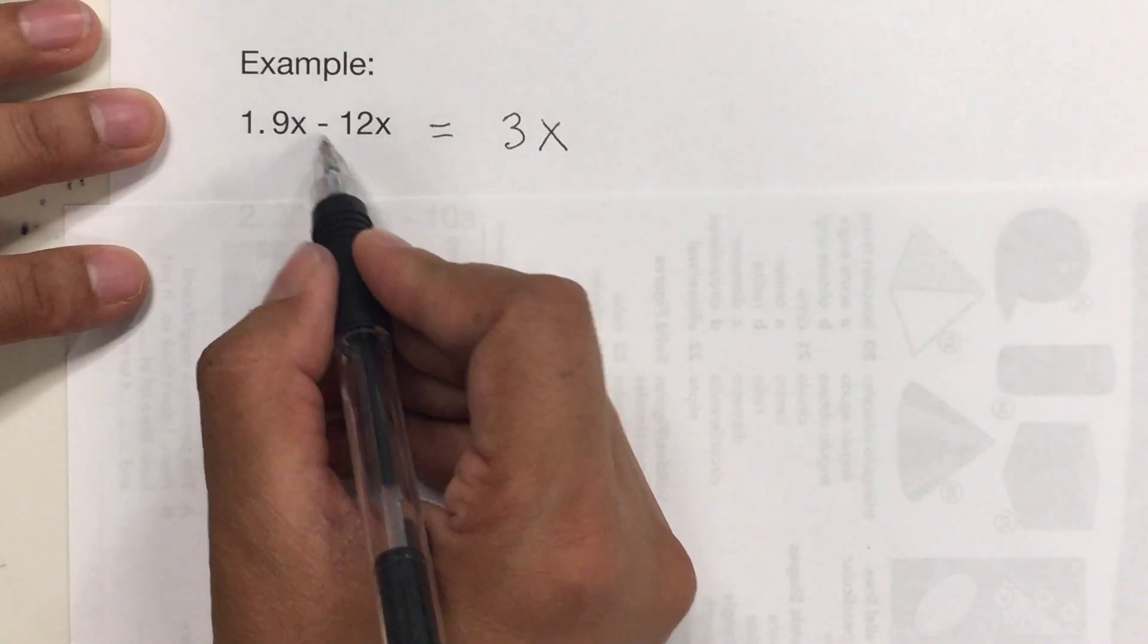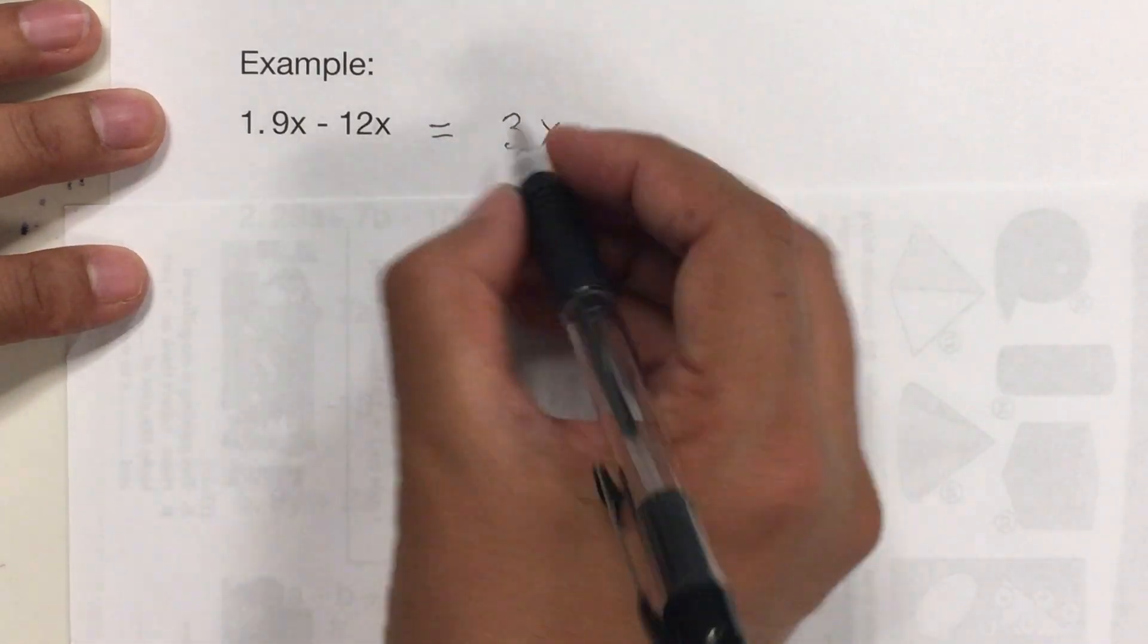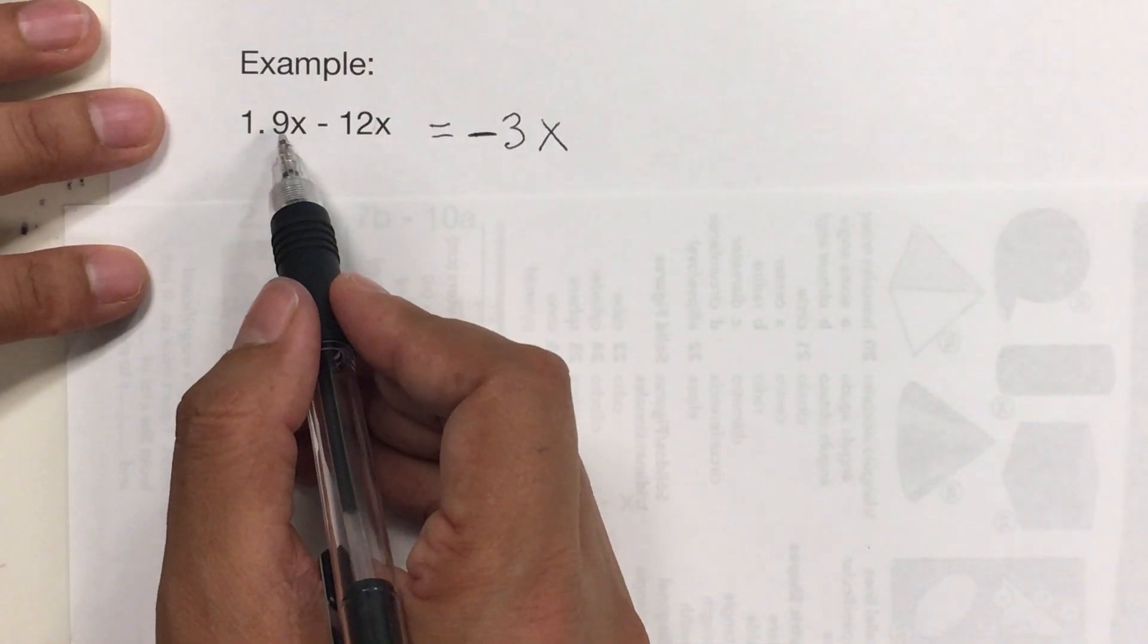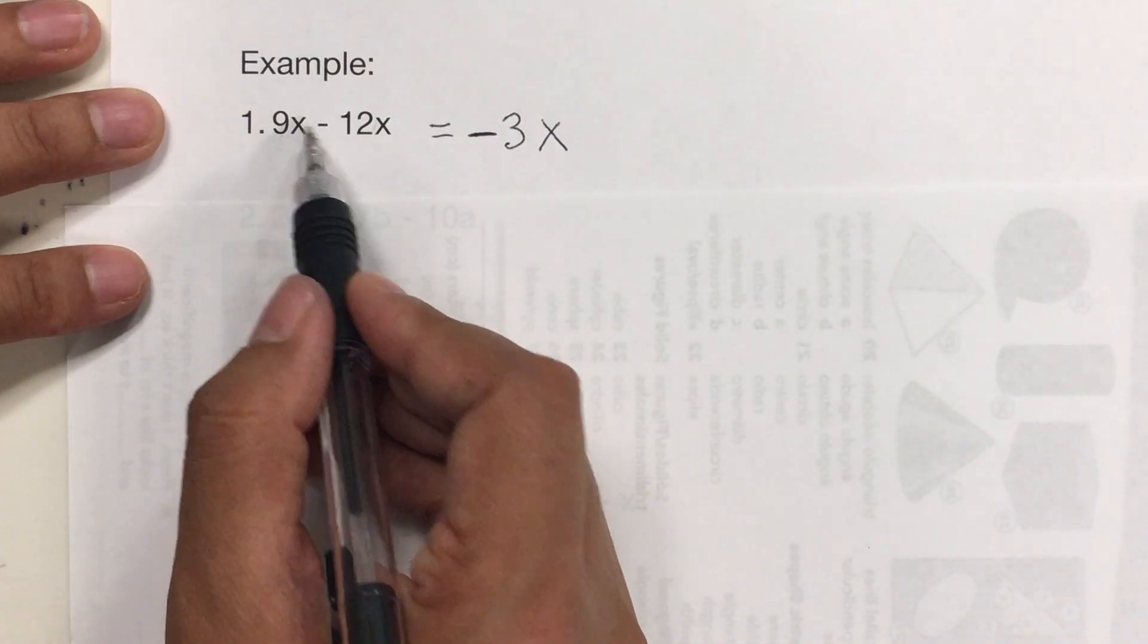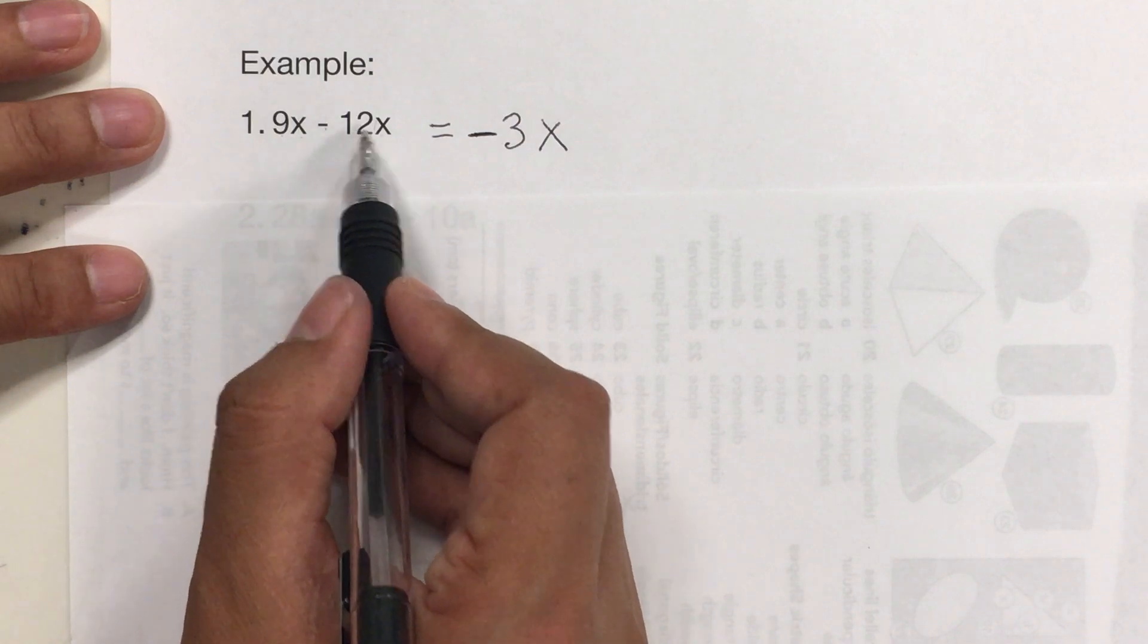And then, leave the sign of the bigger 1. The bigger 1 is 12, so it's going to be negative. So, some people say, I have 9 boxes, but I owe 12 boxes.